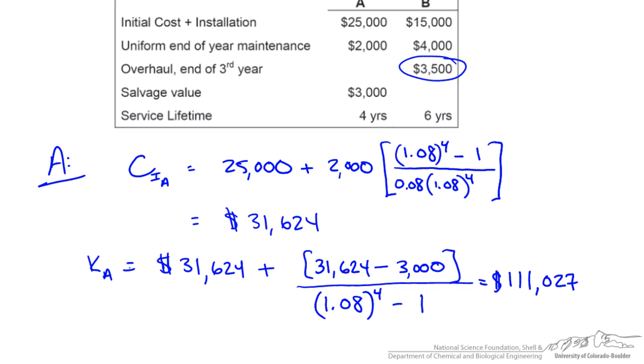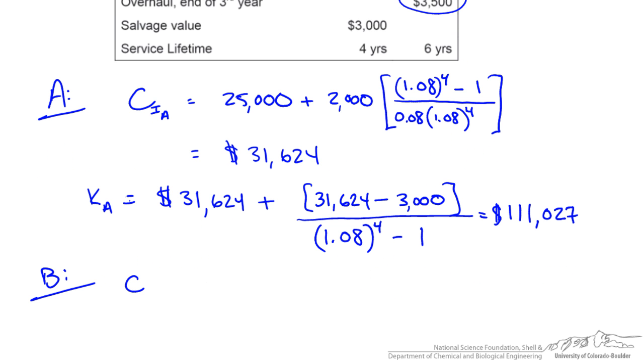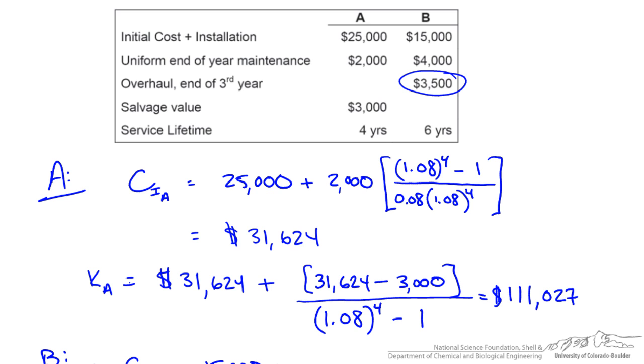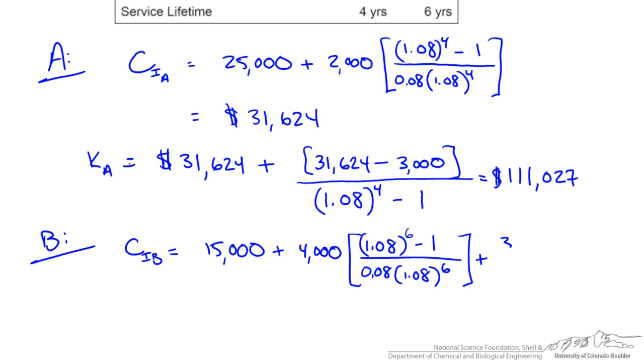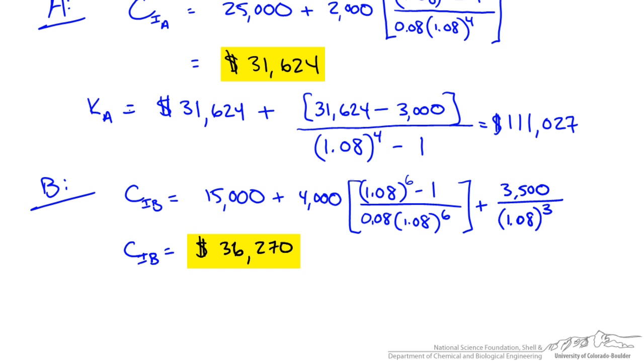Before I get into what that means, let's do the same analysis for reactor B. Our initial cost is $15,000 plus our maintenance cost of $4,000 a year plus the overhaul cost. To bring that to present value we use the compounding vector at year 3. Our initial cost of B comes out to roughly $36,000. You can see the initial cost is more than reactor A.